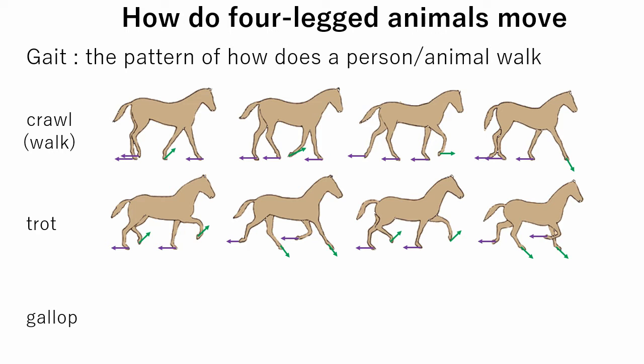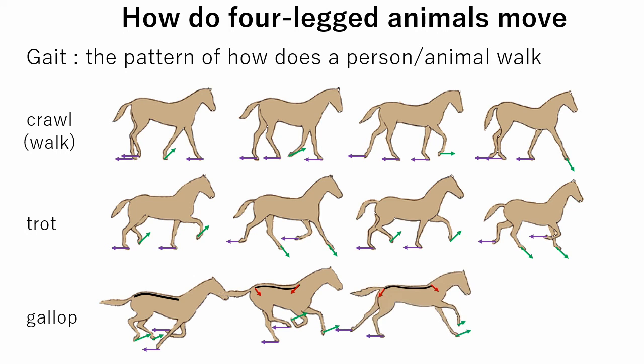The gallop is the fastest gait. Each stride can cover more ground than in other gaits, but it's also very energy demanding. In the gallop, we also see the greatest compressing and stretching of the trunk, with the tightest compression happening as the front limbs lift and the longest extension right before the front limbs land.